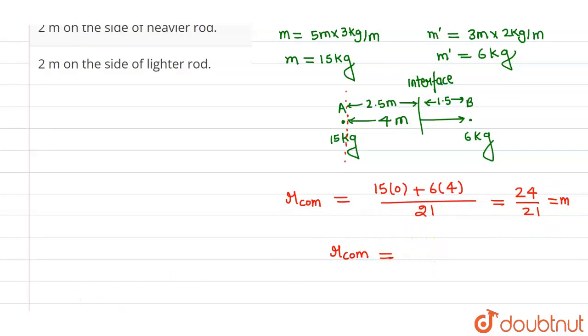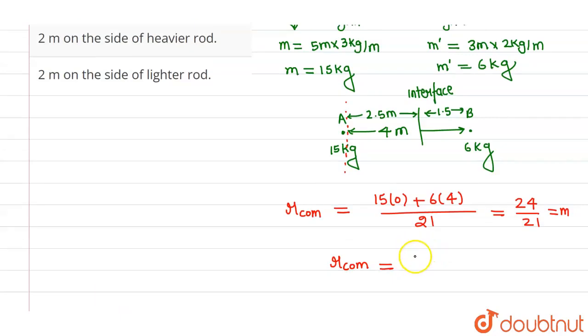So this can be written as 1.14m. This will be from A, 1.14m. This is the distance of center of mass. Suppose this is the center of mass, and from A this is at a position of 1.14m.